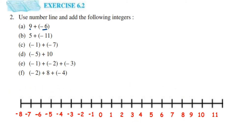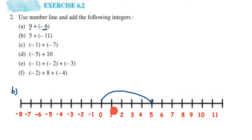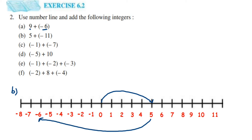In the second one we have 5 plus minus 11. We are going to start from 0. Since 5 is a positive integer we jump directly to 5. Next we have minus 11, which means we have to move 11 steps towards the left side because 11 is a negative integer. Counting 11 steps, we are reaching minus 6. So 5 plus minus 11 is equal to minus 6.